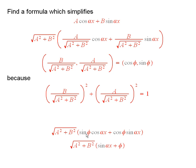And now, from the formula for the sine of the sum of two angles, this is just the sine of alpha x plus phi times this thing.